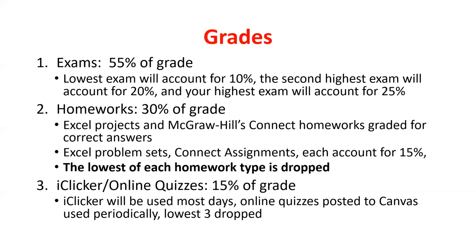If we only have one iClicker question, you get 9 base points just for showing up, and 10 if you get it correct. Generally if you come to every class, you should be getting around 90% or higher of these points. That's 15% of your overall grade — more than your worst exam. This is meant to be purely effort-based. Show up, answer the questions, you'll be fine.